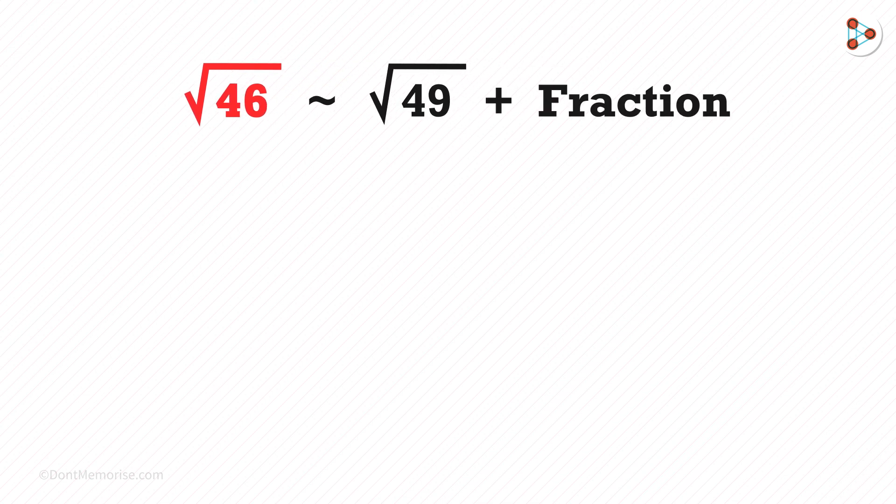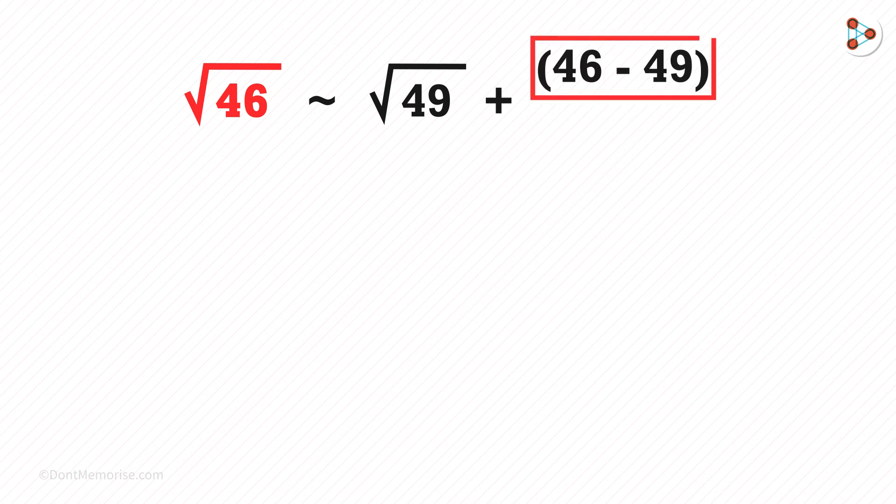Here, we need to add one fraction. In the numerator, we write 46 minus 49 and this difference is very important. In the denominator, we write 2 multiplied by the square root of the nearest square which is square root of 49, and the square root of 49 is 7.